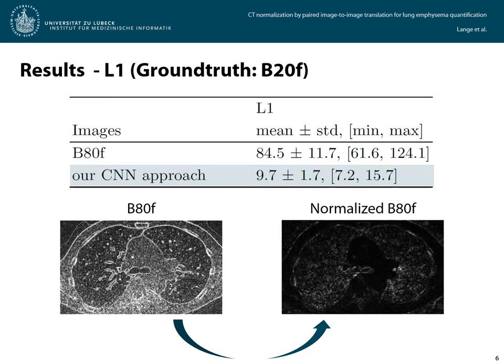The L1 distance was calculated by the mean distance per voxel and then taking the statistics over all 71 patients. The mean L1 distance from the B80F versus the B20F image was 84.5 Hounsfield units with a standard deviation of 11.7, and this could be reduced to a mean of 9.7 Hounsfield units with a standard deviation of 1.7 after normalization with our CNN approach. The great reduction of the difference to the B20F image after normalization of the B80F image becomes even more clear looking at these difference images.